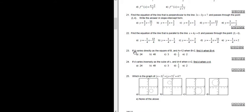Let's do problem number 23. It says, if A varies directly as the square of B, and A equals 12 when B equals 2, find A when B equals 4.